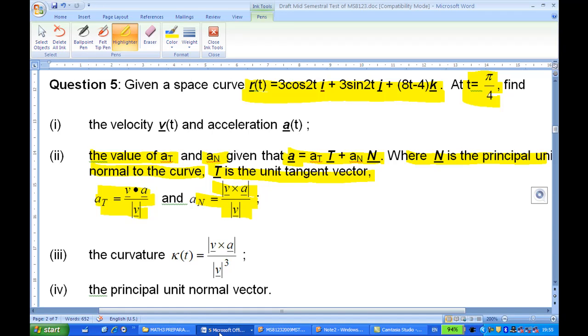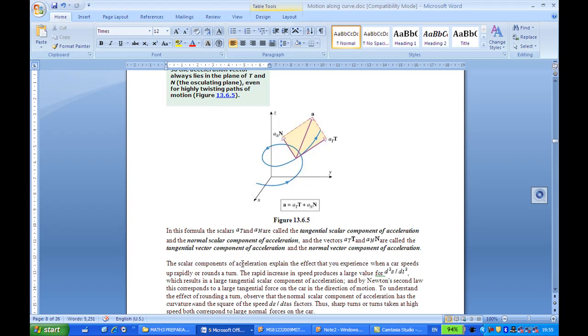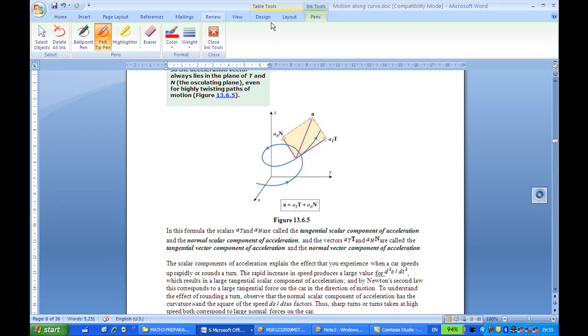Actually, this is also given in Anton. If you look at Anton chapter 16, this is what happens: you have a space curve, and at any point, the velocity, you will find that this is acceleration at any time.